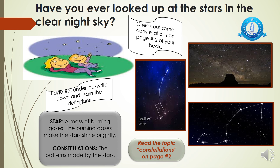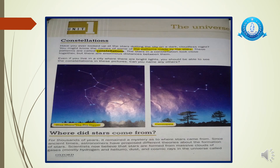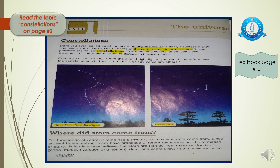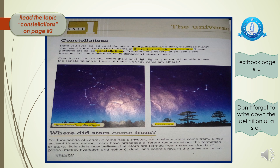You also have to read the topic 'Constellations' on page two. Here is page two of your book — you have already written the date and day, the definition of the universe, and the definition of the star. Now read the topic 'Constellations' from 'Have you ever looked up at the stars?' to the two constellation pictures. Don't forget to write the definition of a star and underline the definition of constellations: 'The patterns made by the stars are called constellations.'